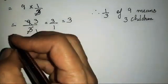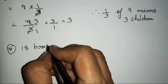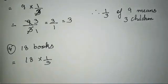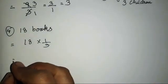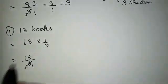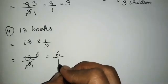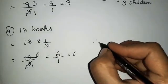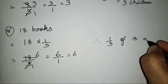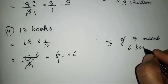For 18 books, we calculate 18 × 1/3. So 18×1 = 18/3. Then 3×6 = 18, giving 6/1 = 6. Therefore, 1/3 of 18 books is 6 books.